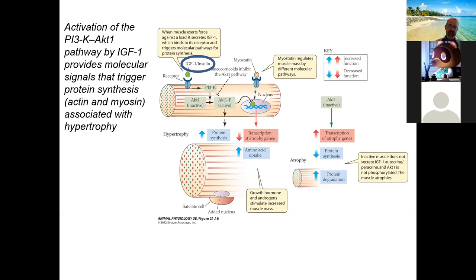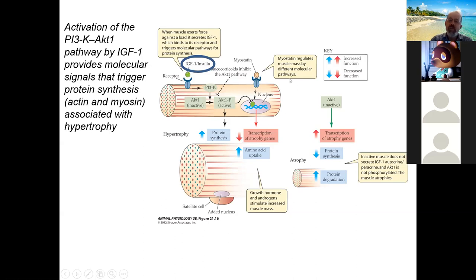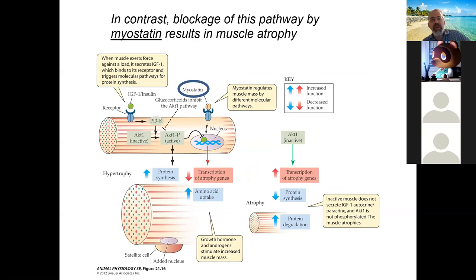There's a yin and yang: muscles can get bigger through hypertrophy, and they can also get smaller — atrophy — when not active or with age. A protein called myostatin is the counterpoint to IGF-1. Muscle growth is balanced by the roles of IGF-1 and myostatin — they are antagonistic. Myostatin blocks the same PI3 kinase pathway that IGF-1 activates. Chronically elevated myostatin leads to muscle atrophy.